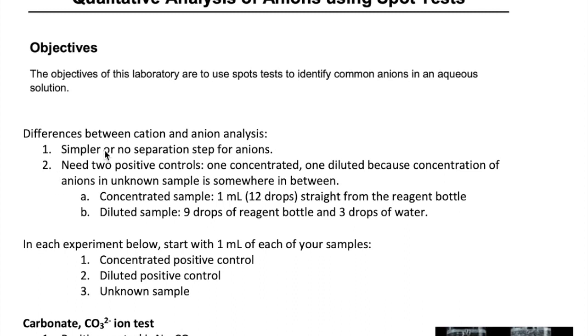For some anions, you will not need to separate them before you can identify them. This reduces the potential mistakes that can happen. For other anions though, you will still need to separate them out from others, but the steps are much simpler compared to the cation separation.